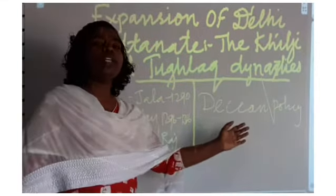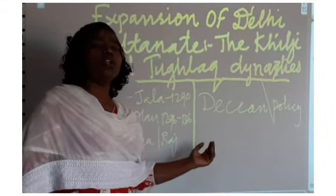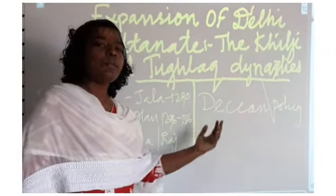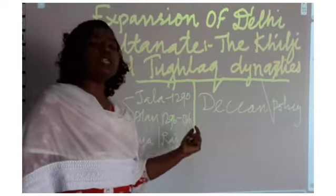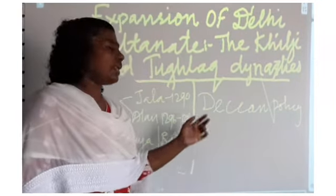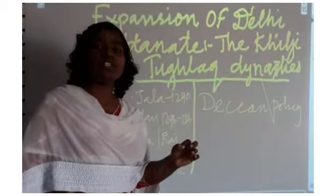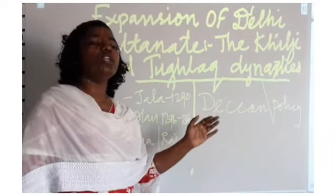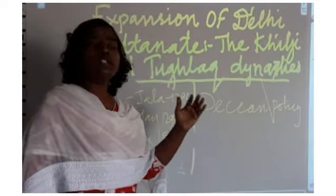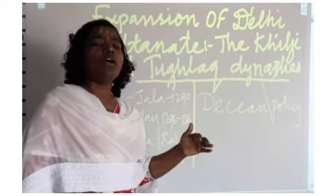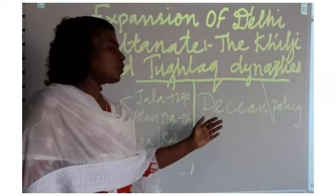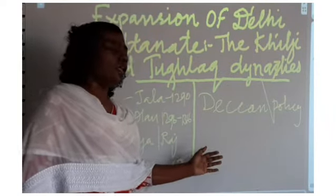The tribute paid by the Deccan rulers and the wealth plundered from the temple cities made it possible for Alauddin Khalji to maintain a strong army. He was an ambitious ruler who wanted to conquer the whole world, and in order to do so he needed a good standing army. That's why he followed the Deccan policy.